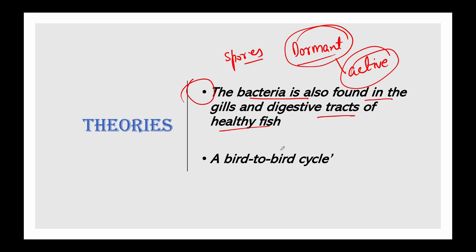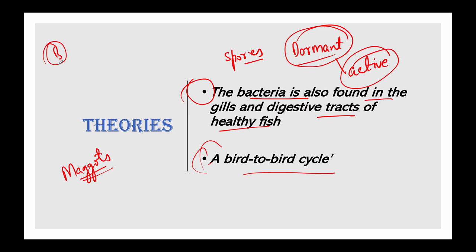The second theory is a bird-to-bird cycle: when one bird dies, maggots feed on the dead body, concentrating the toxin. Birds feeding on these dead birds then get affected. This was observed at Sambar Lake, as researchers found only insectivorous and omnivorous birds were affected — not herbivores. Birds that fed only on grass and plants were unaffected; only those that ate insects or both insects and vegetation were affected.